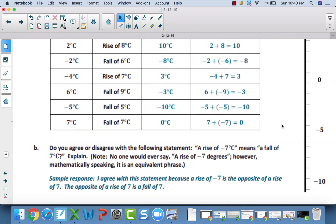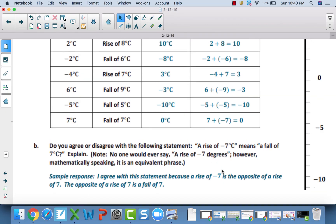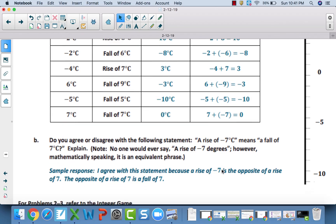Now, do you agree with or disagree with the following statement? A rise of negative 7 degrees Celsius means a fall of 7 degrees Celsius. That is correct. Now, we would never say a rise of negative 7 degrees. That doesn't really make sense, but mathematically speaking, this is an equivalent phrase. It's weird because you would never hear that in the real world, but mathematically, that's actually true.